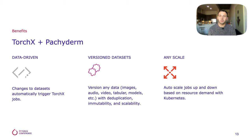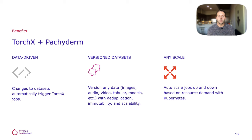Together, TorchX and Packaderm combine to provide a foundational platform for combining the code and data lifecycles. Versioned data repositories in Packaderm can track all of the changes to our data, and these changes can in turn trigger pipelines that automate the reproducible workflows scheduled with TorchX. Furthermore, it's all built on Kubernetes and object storage, ensuring that it can scale up to any task. Building data versioning and reproducibility into the core of our machine learning workflow is foundational to applying machine learning in practice. Without it, we cannot hope to improve collaboration, reliability, or agility. TorchX and Packaderm pair nicely to provide the foundational elements of applied machine learning.